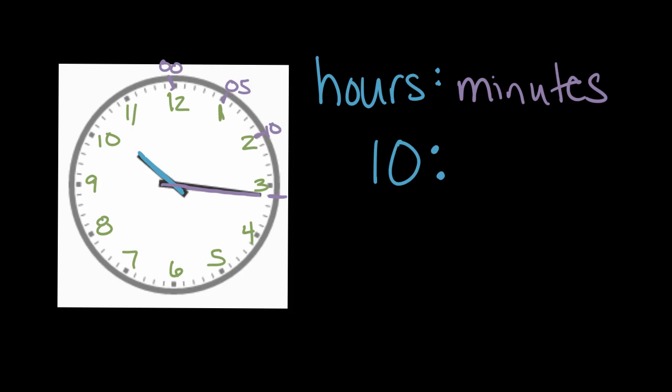And it keeps going: 10:06, 10:07, 10:08, 10:09, 10:10 — right here. Maybe you can see this pattern: it keeps going, and it was zero minutes after the hour, so it was zero, then five, then 10. So this one is going to be 15. We're going to keep counting by fives, and then one more minute after that is 16. So it is 10:16, or 16 minutes after 10.